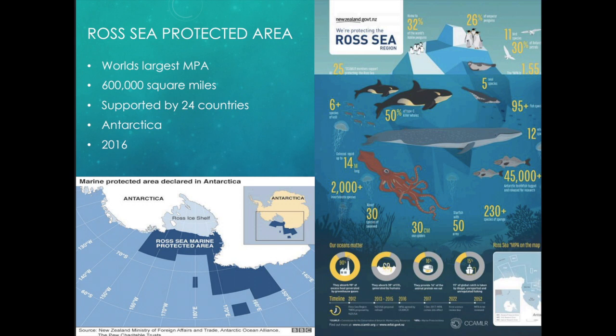The next one is the Ross Sea Protected Area — the largest MPA. It is 600,000 square miles and is located in Antarctica. It is supported by 24 different countries that decided this area needed to be protected. It was created in 2016 and you cannot fish there — it's a big protection preventing people from fishing and exploiting that area.